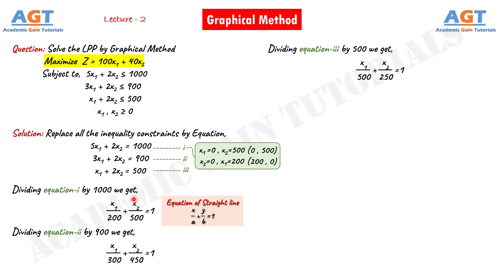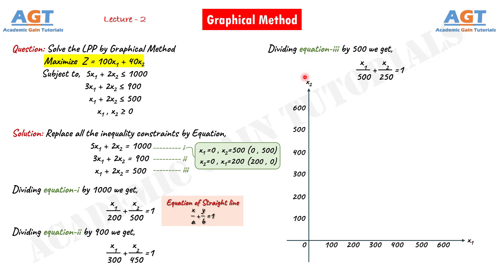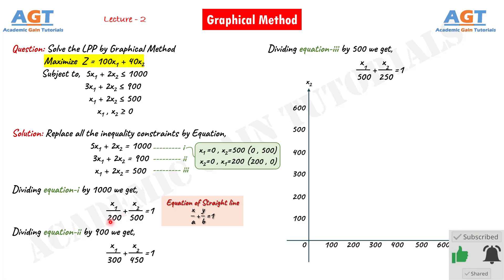Now we will plot all three straight line equations on a graph. Here we have our graph. We have used a plain sheet to make the graph; you can use a graph paper if you want. Along this axis we have x1, along this axis we have x2, and this point is the origin or 0. On the graph the ranges are taken as 0, 100, 200, 300, up to 600. We have taken points at a distance of 100 in this case, because if we look at the intercept values below x1 and x2 in these three equations, the values are 200, 500, 300, 450, and 250.